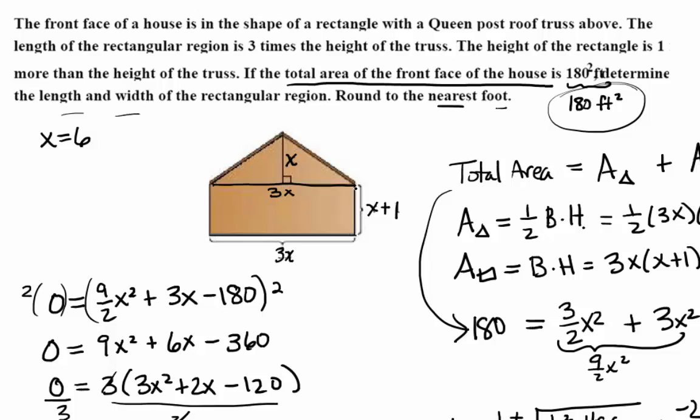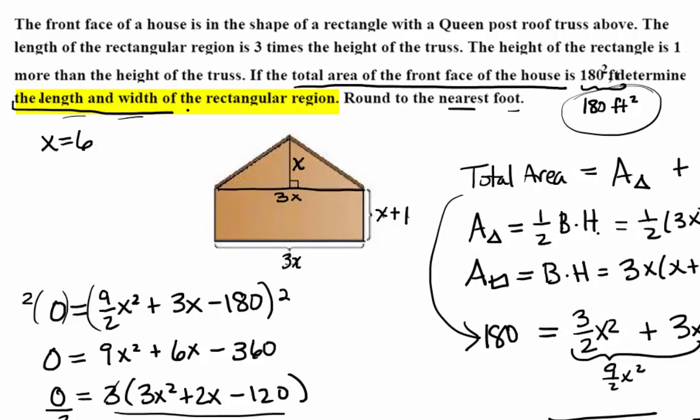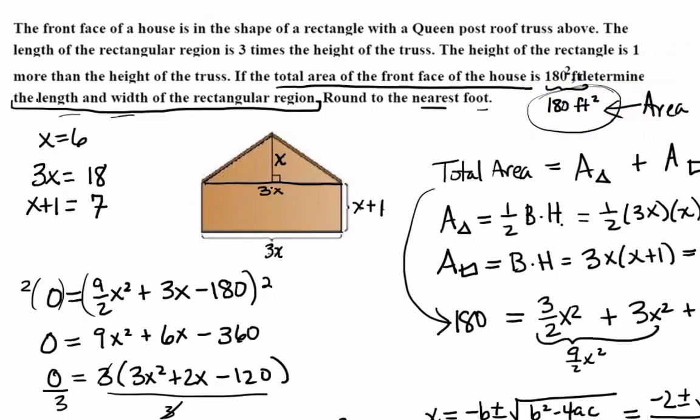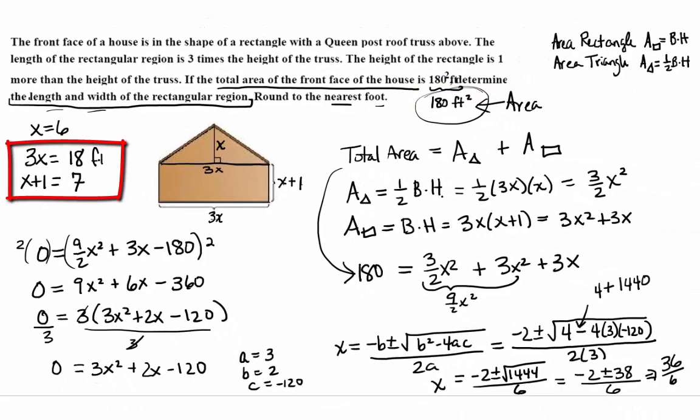But they're asking you to find the length and the width of the rectangular region. So the length of the rectangular region is 3x, and the width is x plus 1. 18 and 7, and what are the units going to be? Area was in feet squared. These are lengths. Yes, regular feet.